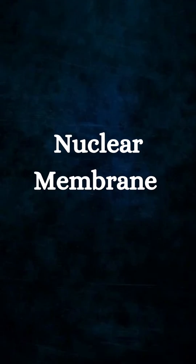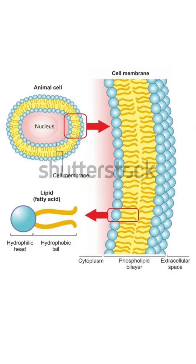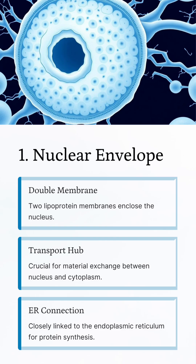Nuclear membrane. The nucleus is bounded by two membranes of lipoprotein. This membrane plays an important role in the transport of material between the nucleus and the cytoplasm. It is closely connected to the endoplasmic reticulum, a network that helps with making and moving proteins and other materials.